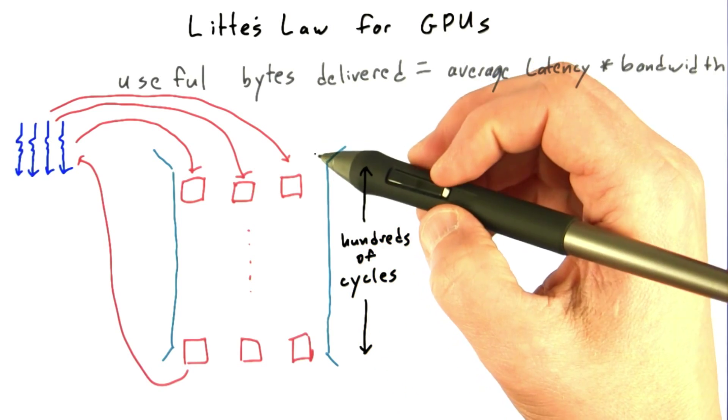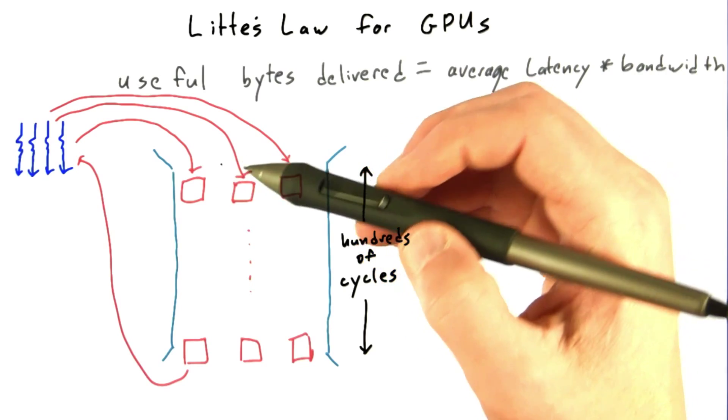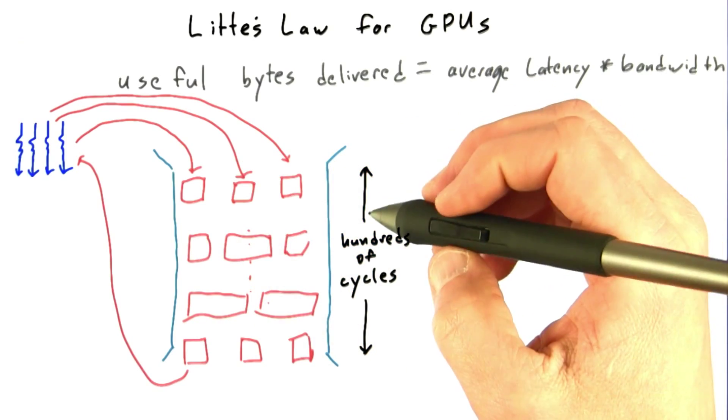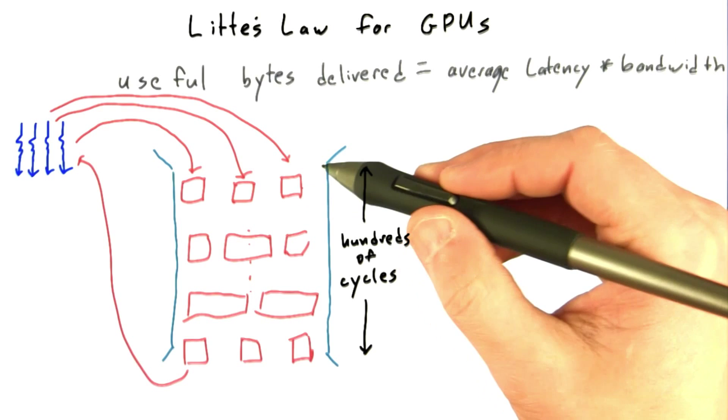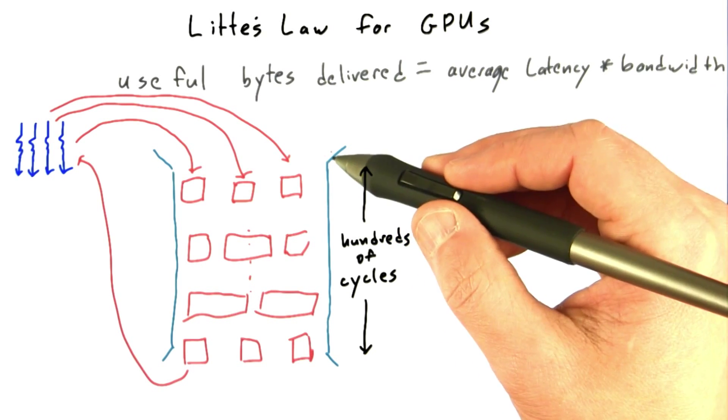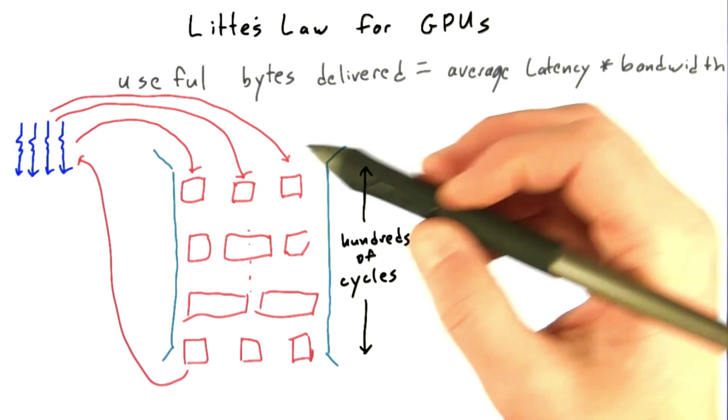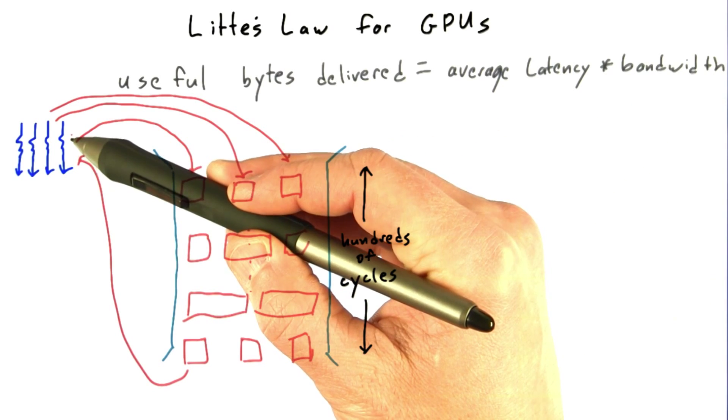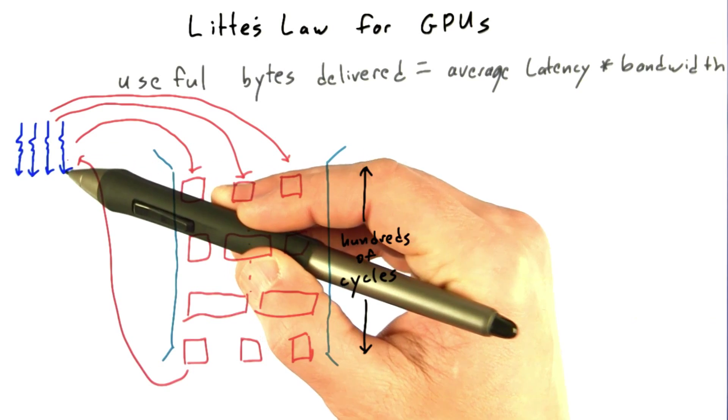So when you only have a few threads issuing transactions, the pipe is mostly empty. This could happen, for example, if you don't have all of your SMs actively filled with threads that are issuing transactions, or if the latency between the transactions coming from each thread is too high.